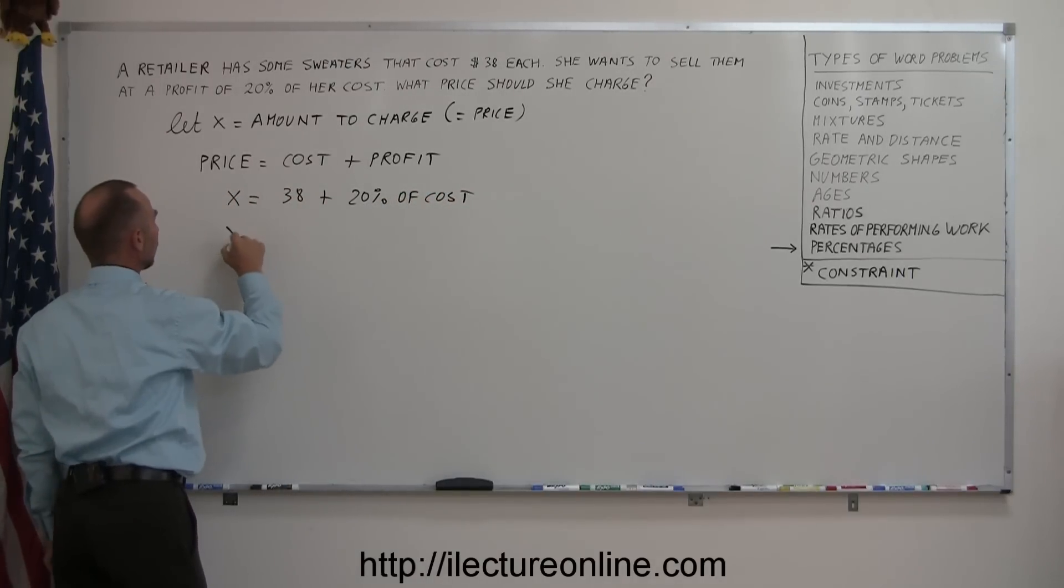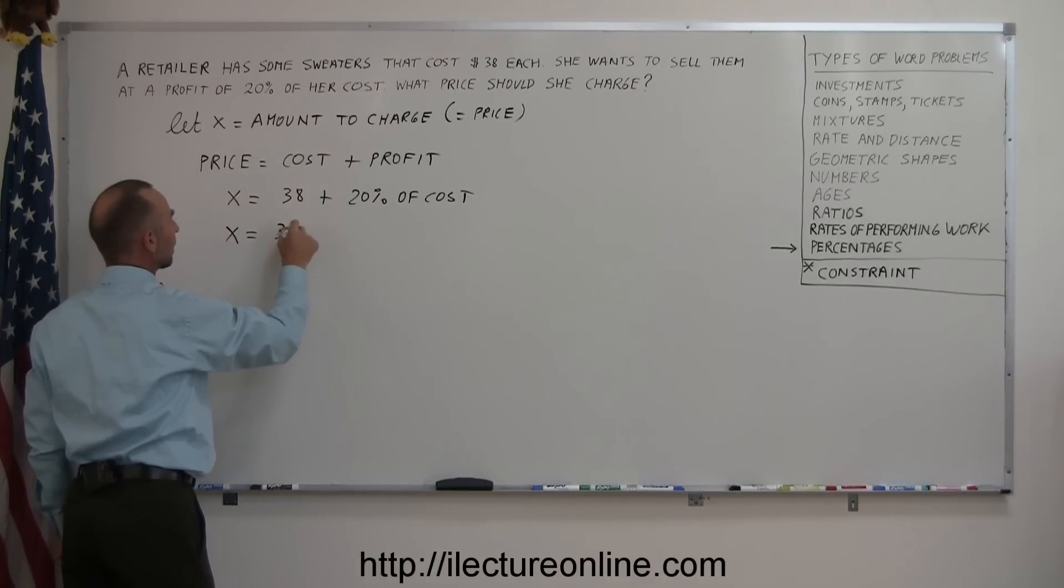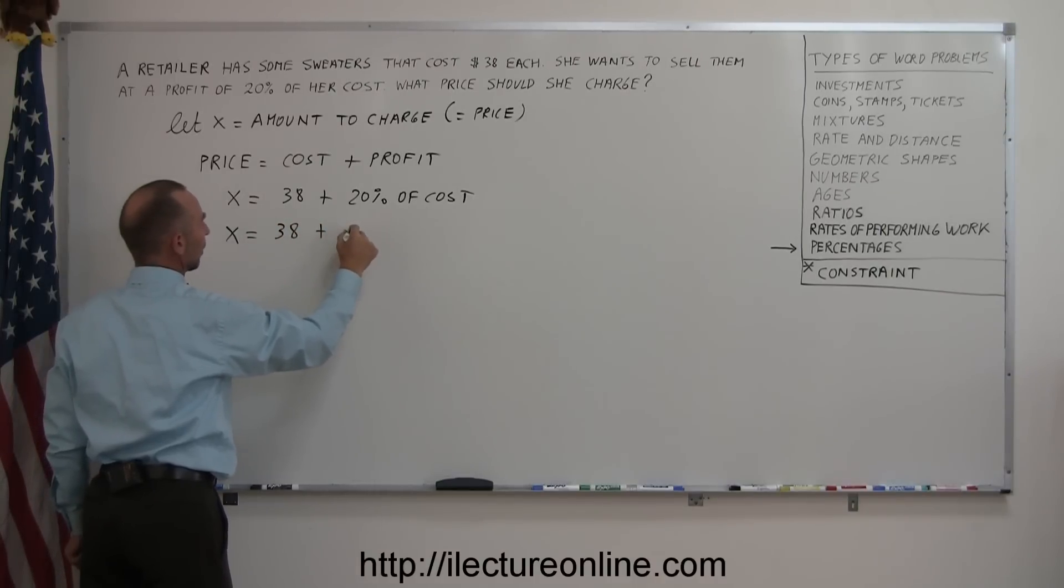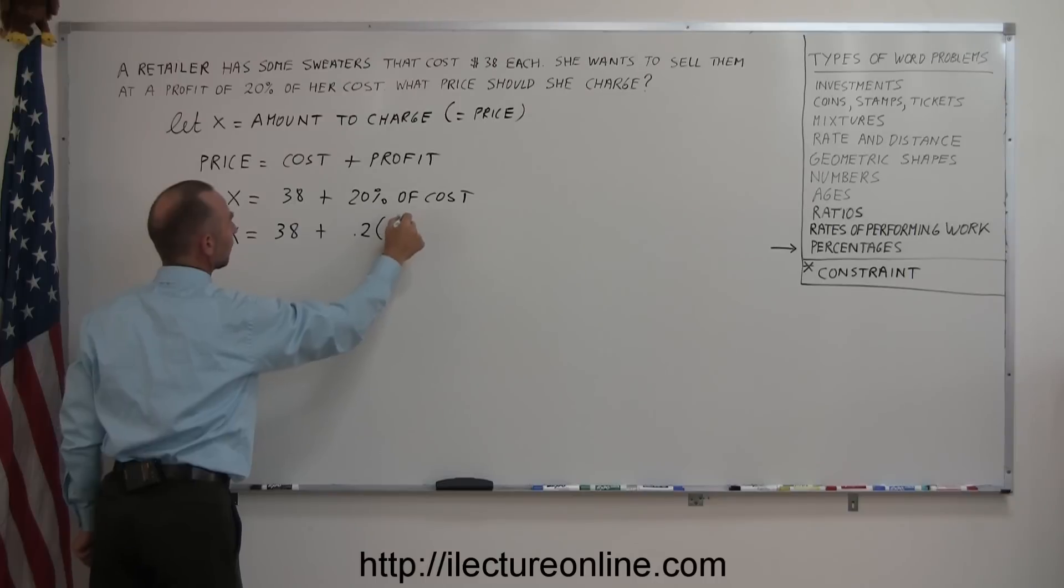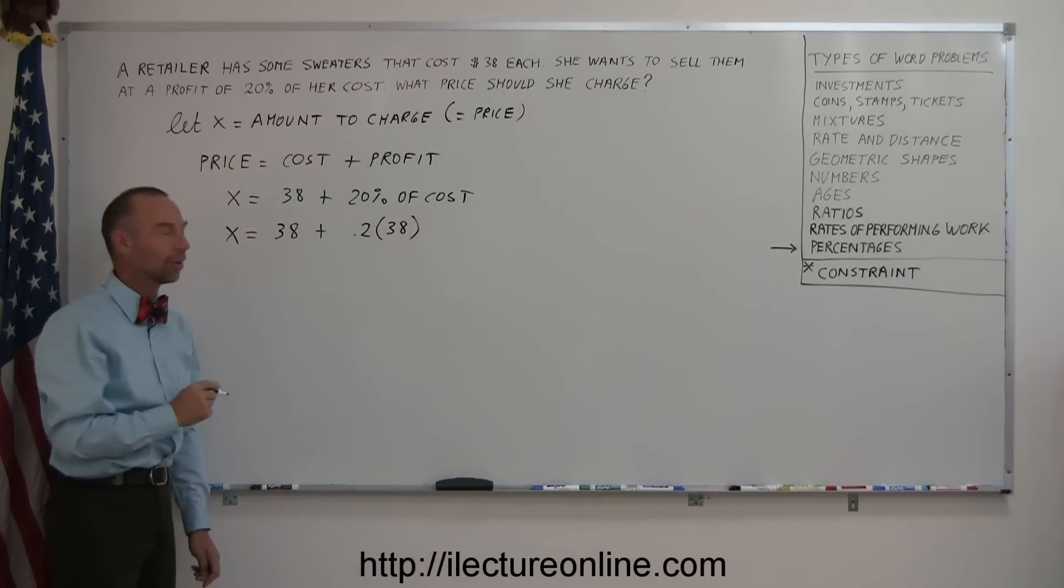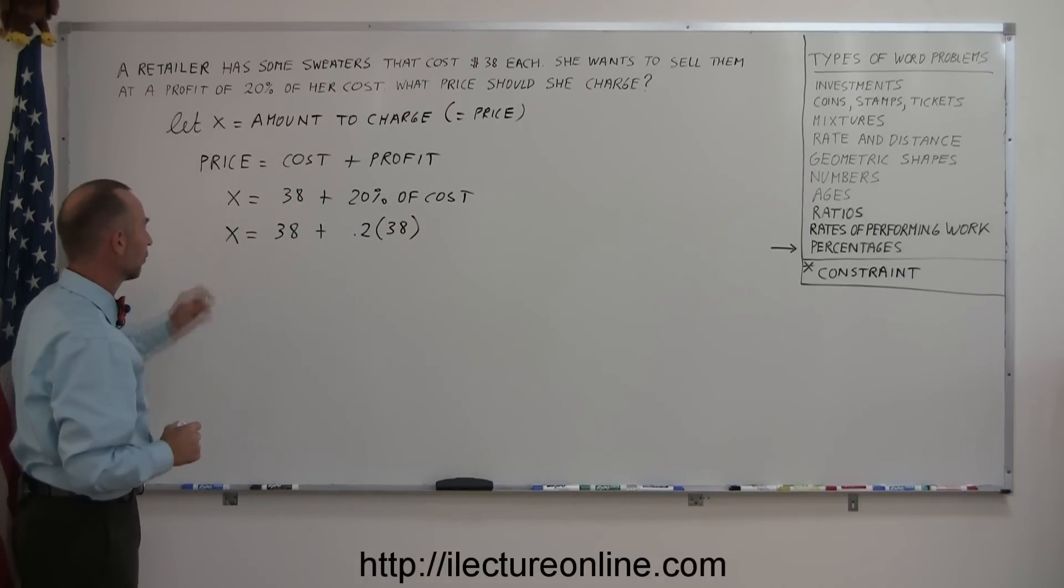And then converting that into what we know. So this is $38 for original cost plus 20%. That's 0.2 times the cost, 38. And now we're ready to solve this linear equation for the variable X.